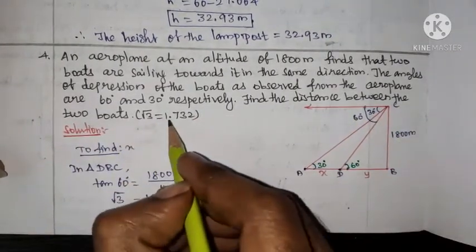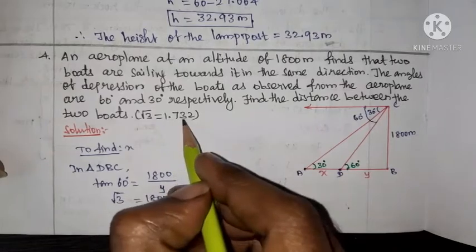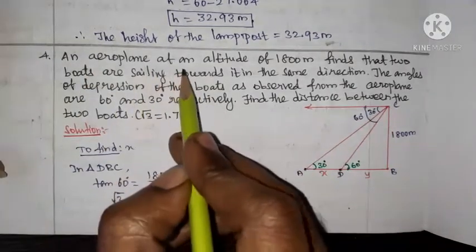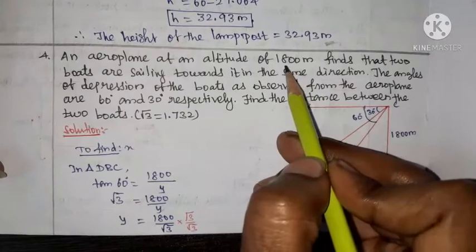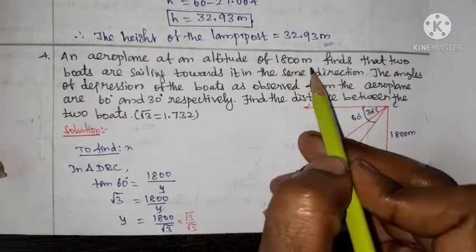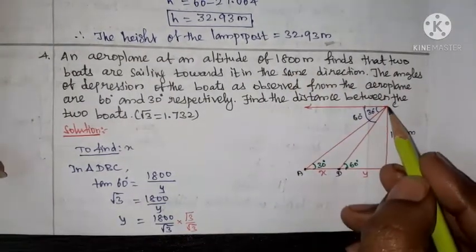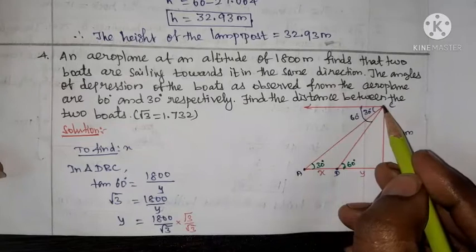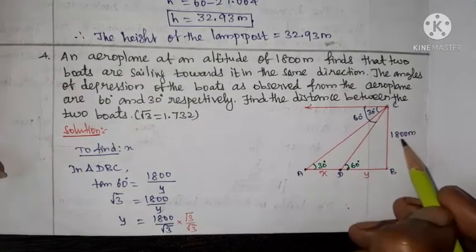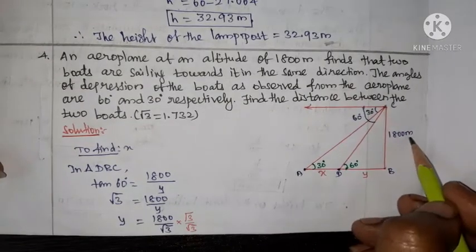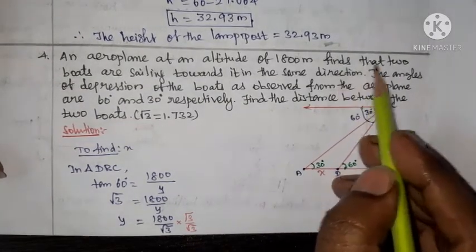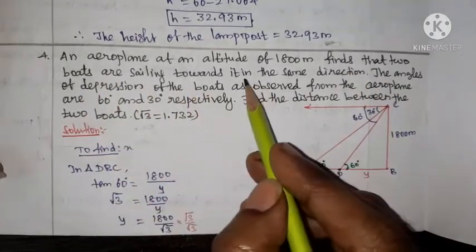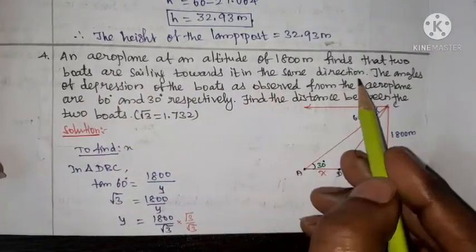Root 3 value is 1.732. The aeroplane is at an altitude of 1800 meters. The two boats are sailing towards it in the same direction.